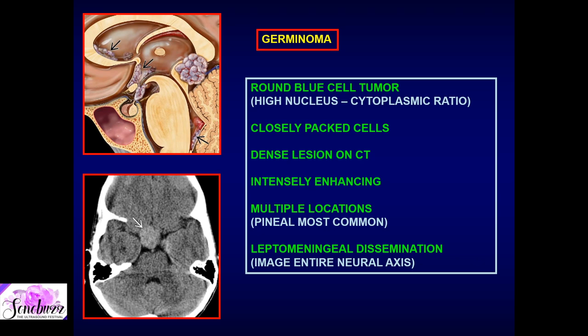On CT, germinoma is a hyperdense lesion. On MRI, it is iso to hyperintense on both T1 and T2 sequences. There may be small areas of hemorrhage but not a large hematoma. It tends to engulf surrounding structures and cause mass effect. When situated in the pineal gland region, there may be chunky calcification representing the calcified pineal gland. On contrast, like lymphoma, there is intense associated enhancement.